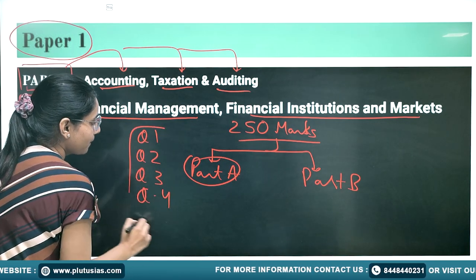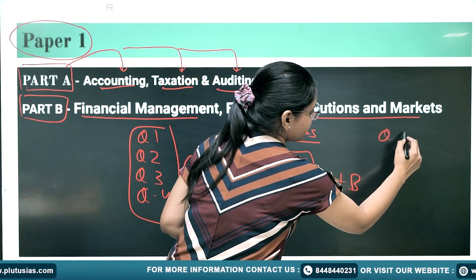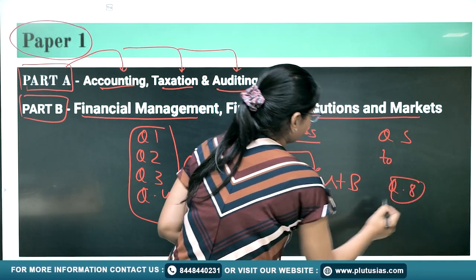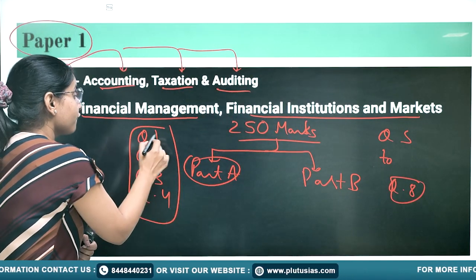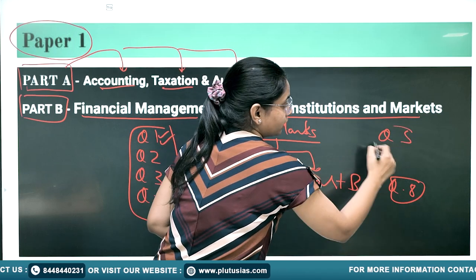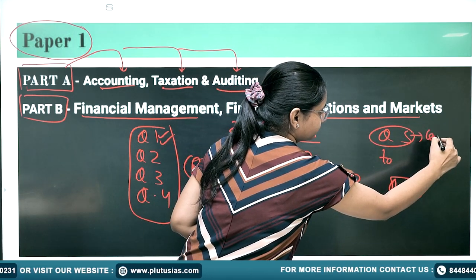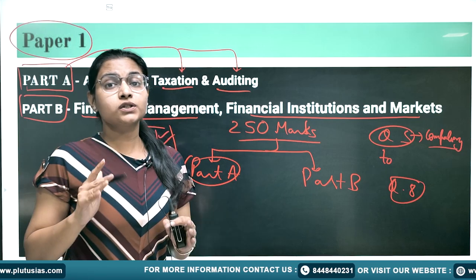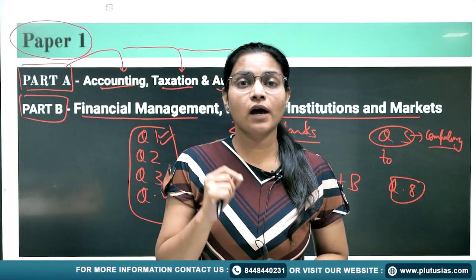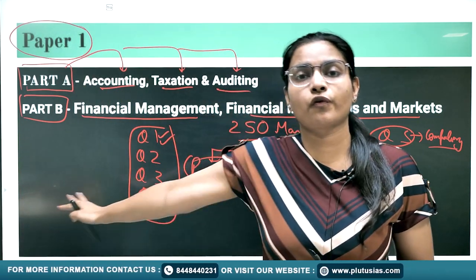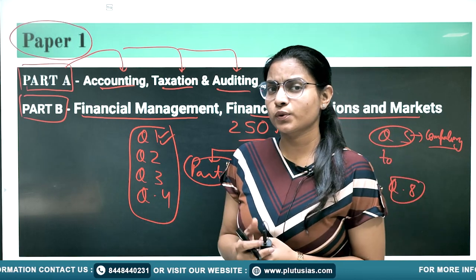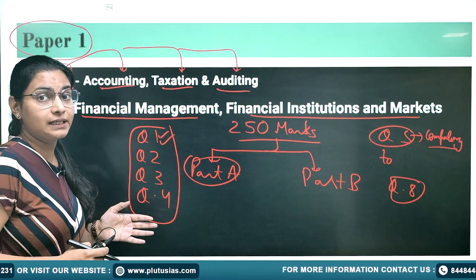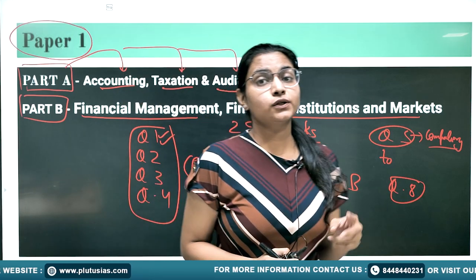The first four questions are given in Part A, and from the fifth to eighth question is given in Part B. The first and fifth questions are compulsory. Thereafter you have to write three more questions, but you have to choose at least one question from each part.